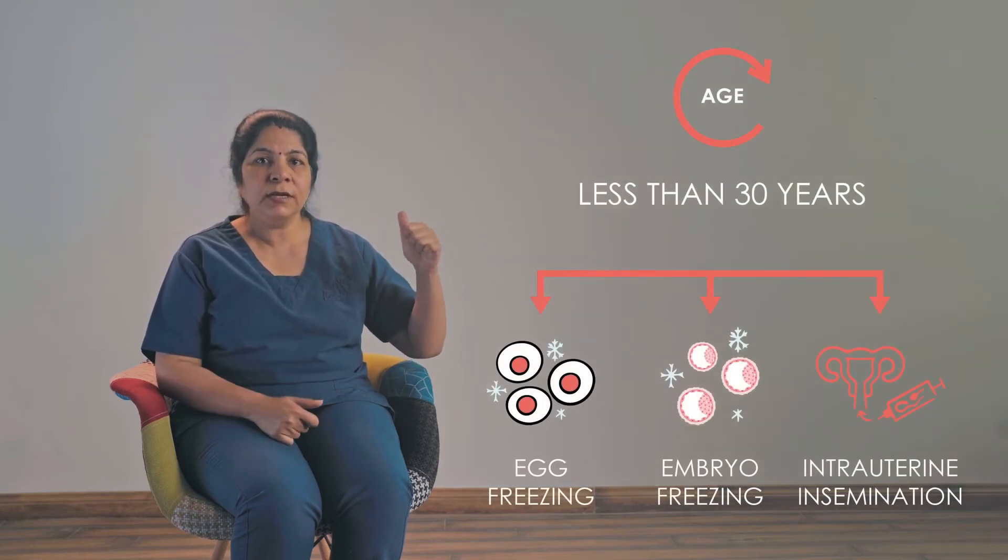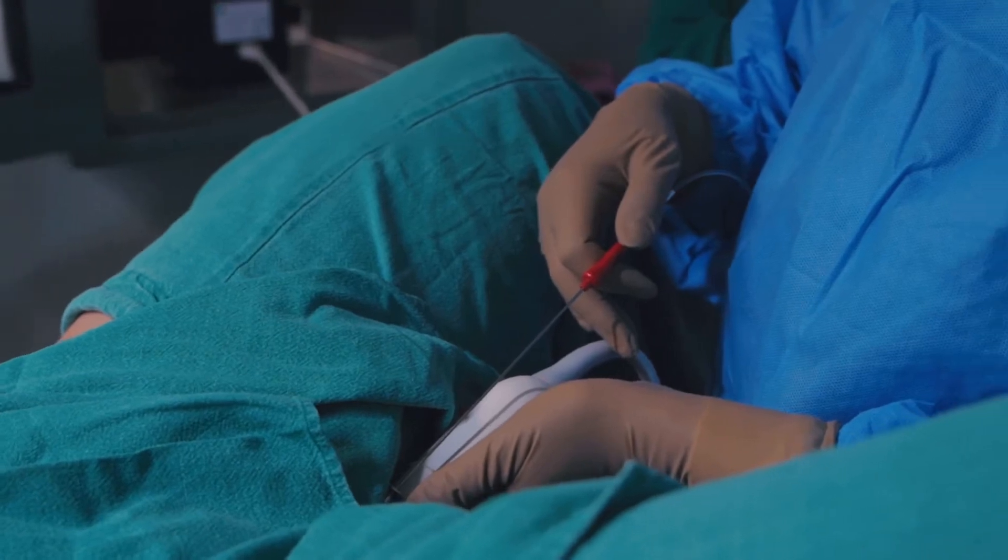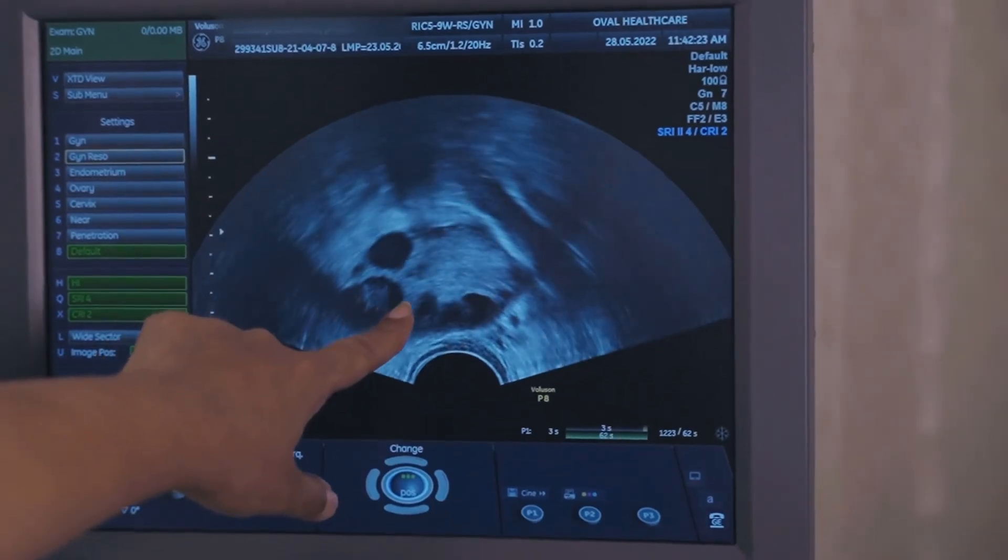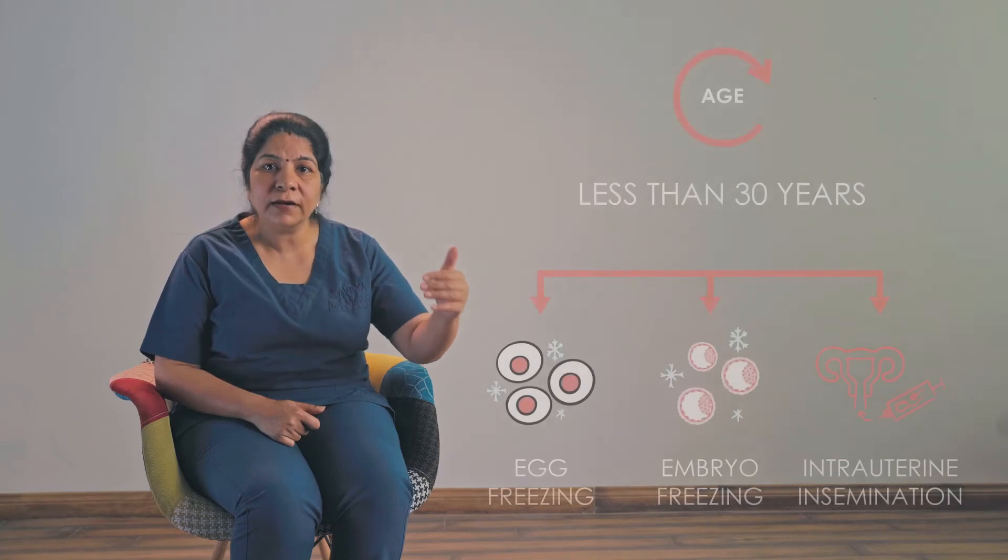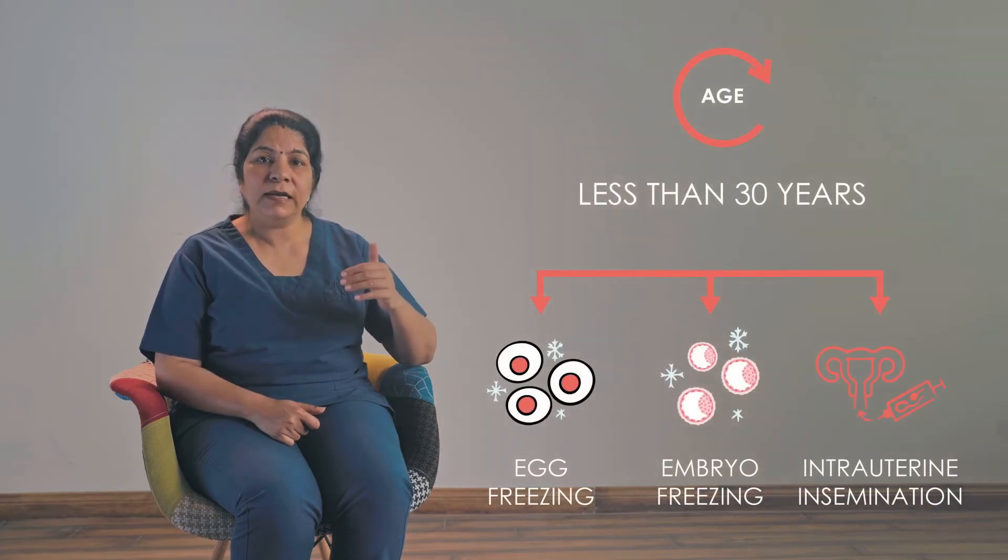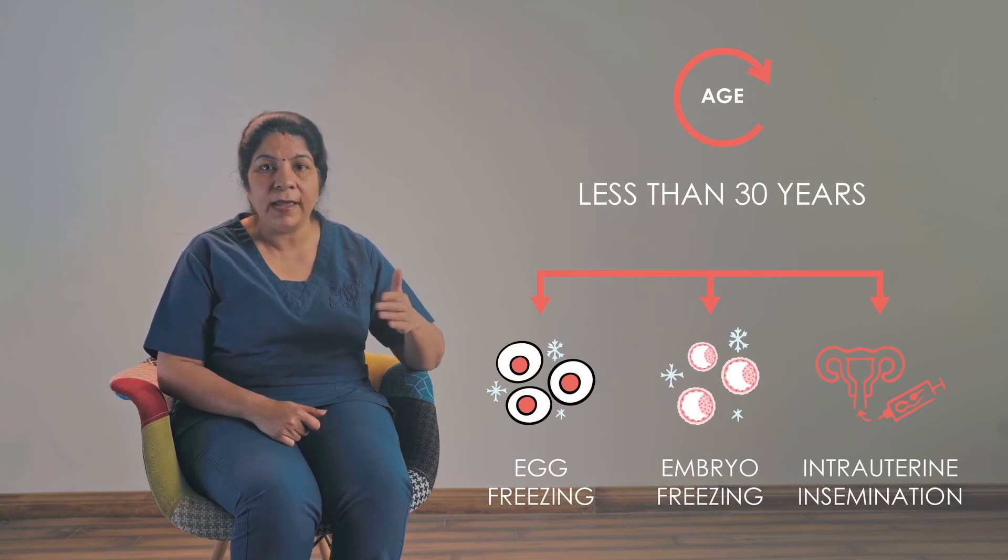I would suggest that you can opt for one or two cycles of IUI. Check with your doctor. You can know where you stand. Are there any other factors for infertility? If there are no other factors, you can opt for one or two cycles of IUI. And if the ovarian reserve is very low, if it is less than two, I suggest that you should consult your fertility specialist and you can opt for IVF cycles.